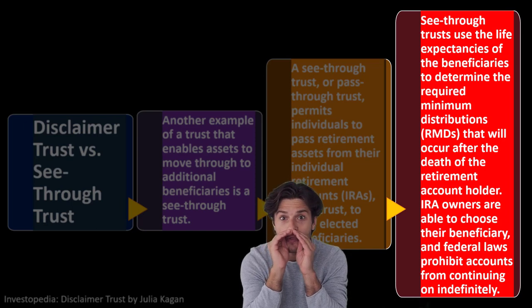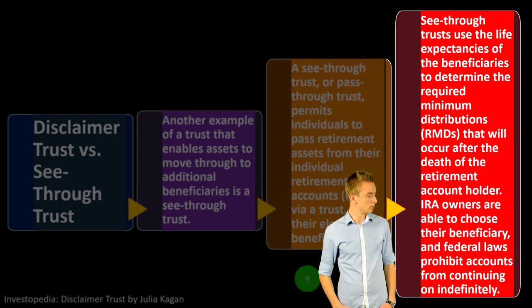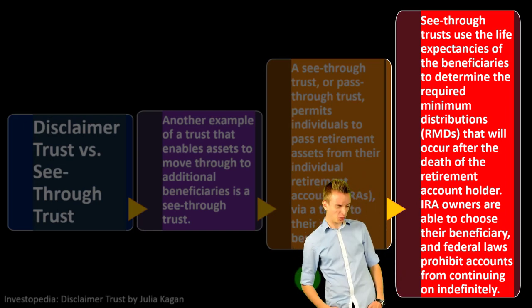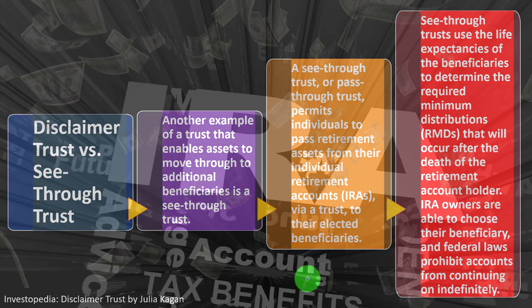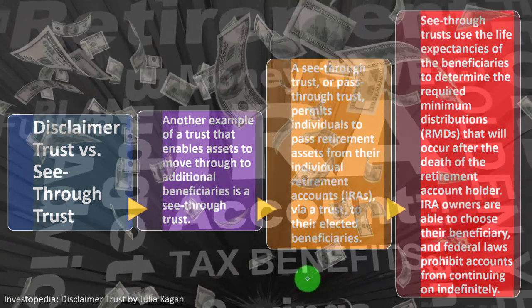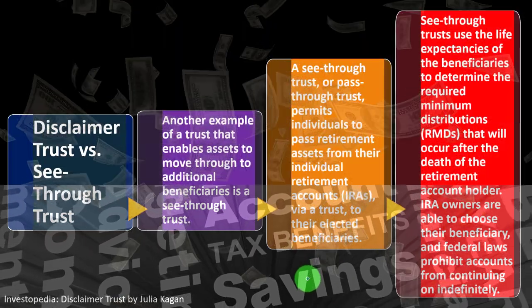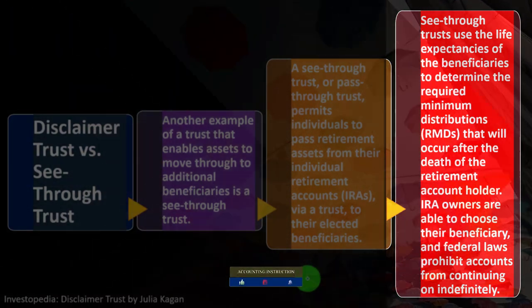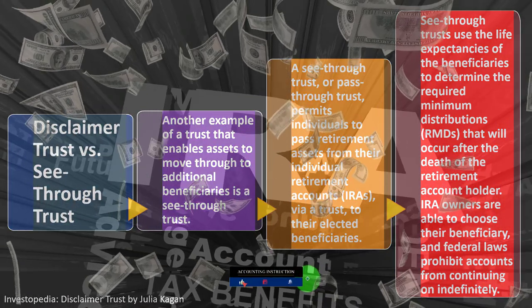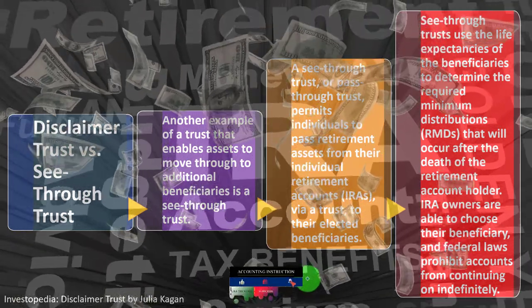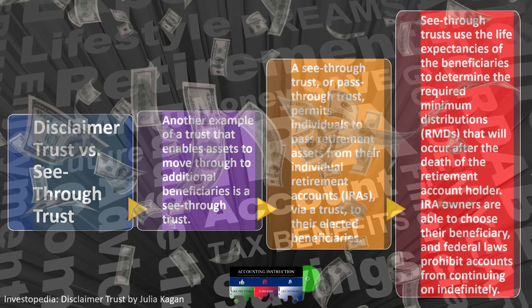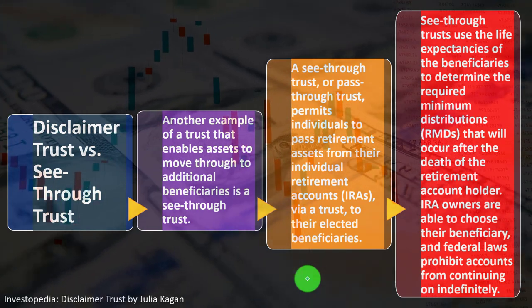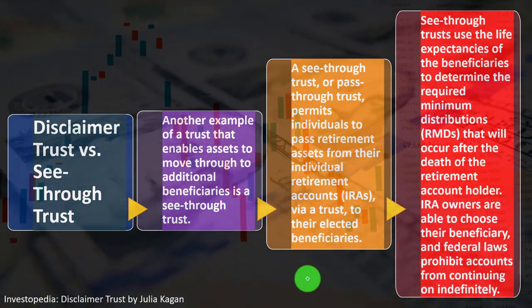IRA owners are able to choose their beneficiary, and federal laws prohibit accounts from continuing on indefinitely. If you have money in an IRA or 401(k) plan, you can think of them as mutual funds under the umbrella of a retirement plan. The reason you put money into an IRA or 401(k) in the first place is usually because you got a tax benefit when you put the money in, and the growth — dividends and interest — is generally not subject to tax until you take the money out.